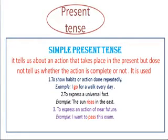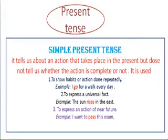The simple present tense tells us about the action that takes place in the present but does not tell us whether the action is complete or not. Matlab ki jo simple present tense hai, woh hume yeh batata hai ki action abhi ho raha hai, par khatam hua ki nahi, yeh hume pata nahi chalta. Like: 'The sun rises in the east,' 'I go for a walk everyday,' 'I want to pass this exam.' Yeh present tense ka simple form hai.